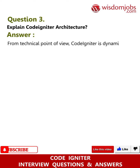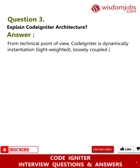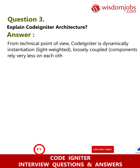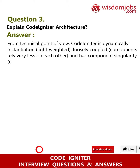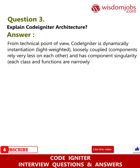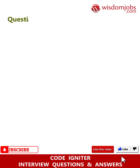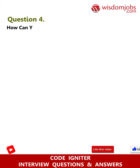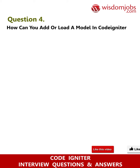Question 3: Explain CodeIgniter architecture. Answer: From a technical point of view, CodeIgniter uses dynamic instantiation, is lightweight, has loosely coupled components that rely very less on each other, and has component singularity — each class and function is narrowly focused towards its purpose.